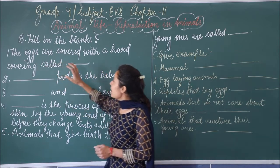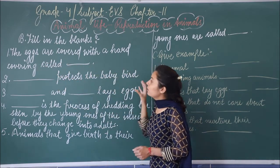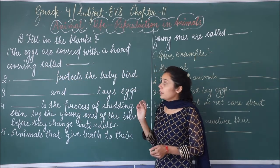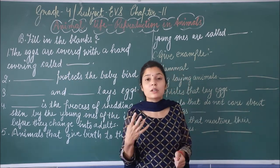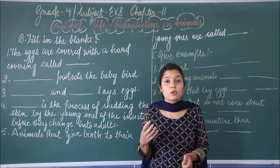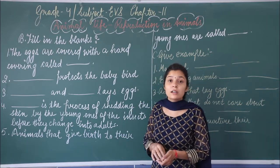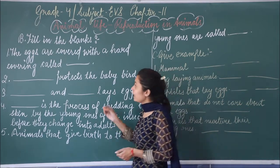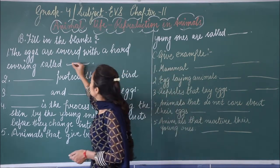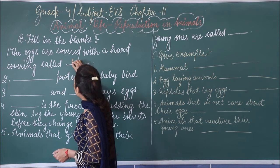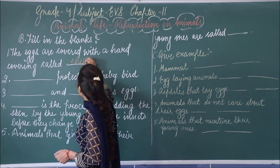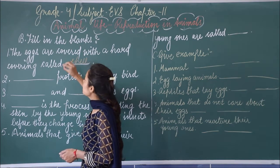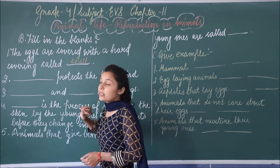Fill in the blanks, first: the eggs are covered with a hard covering — joh egg hai, uski outermost covering, woh ek hard covering se covered hota hai. Jisko hum shell kehte hai. So the outermost covering is shell.